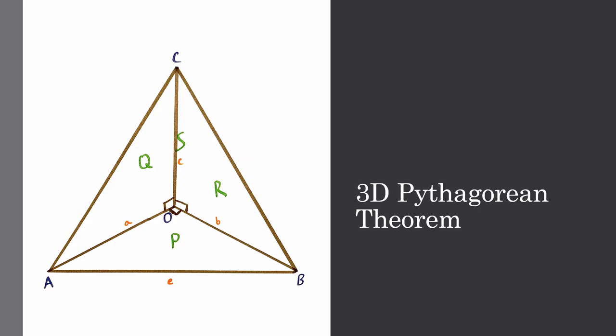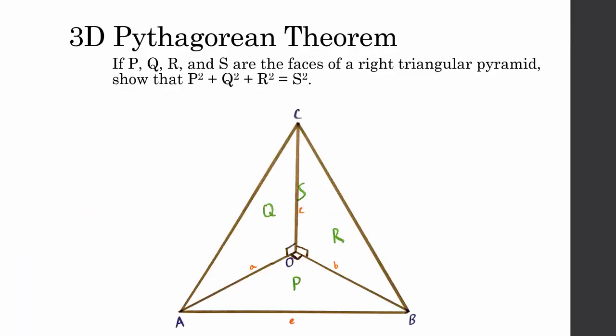Next, we will prove the three-dimensional Pythagorean theorem, which is as follows: if P, Q, R, and S are the faces of a right triangular pyramid, show that P squared plus Q squared plus R squared equals S squared.